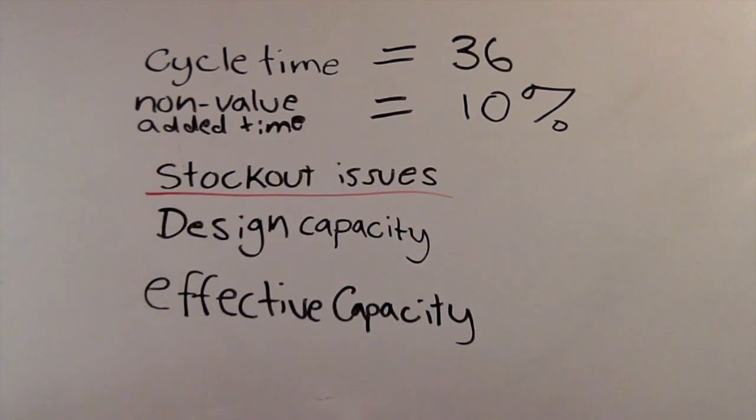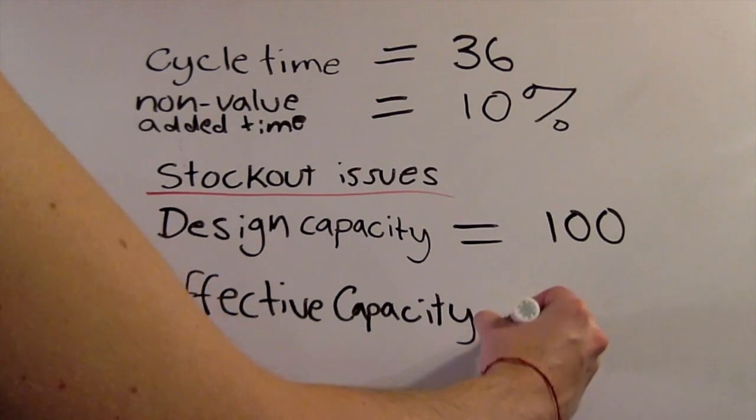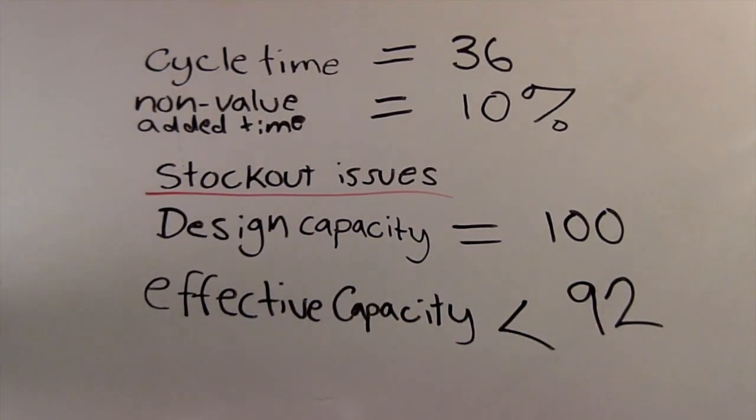Additionally, employees were frequently having to leave their station to restock ingredients, causing delays in the production process. During peak hours, employees were struggling to keep up with the average demand of 92 burritos per hour. Despite the design capacity being 100 burritos per hour, Poncho had an effective capacity somewhere below 92 burritos an hour. This simply wouldn't do.